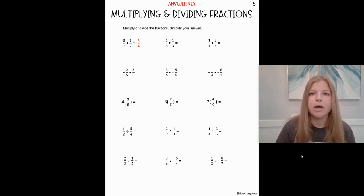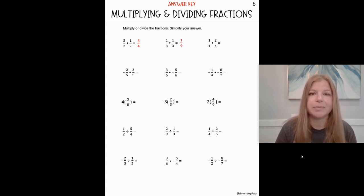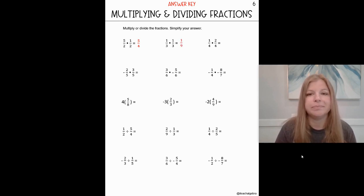Next one: one third times one third. One times one is one, three times three is nine, and so my answer is simply one over nine.